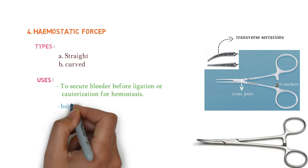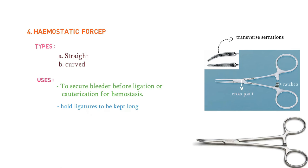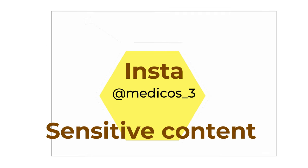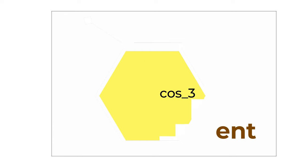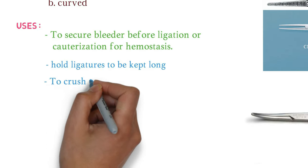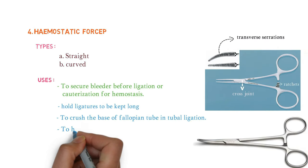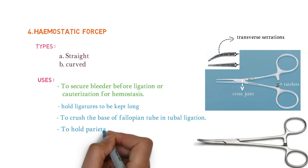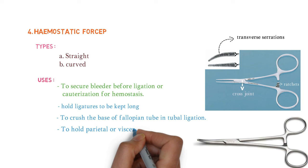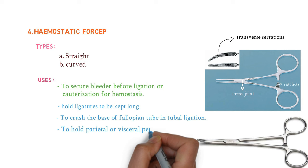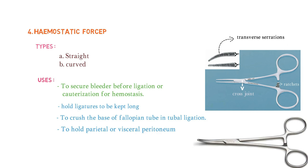In LSCS surgery we hold the ligatures. It is also used to crush the base of the pedicle on the tube in tubal ligation, and to hold the parietal or visceral peritoneum. These are the uses of hemostatic forceps.